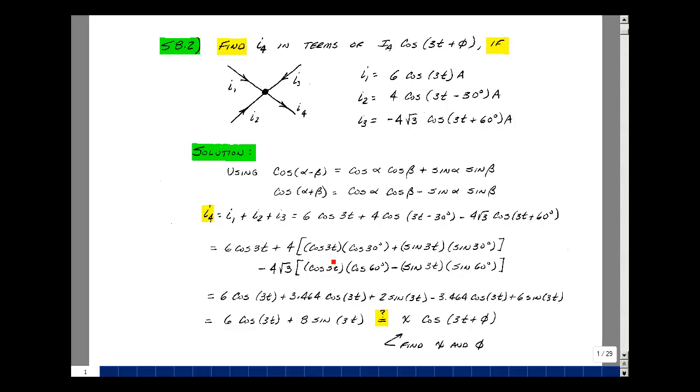Let's evaluate this. The cosine of 30 is square root of 3 over 2. Multiply by 4, you get 3.464 times cosine of 3t. The sine of 30 is a half, so times 4 is 2. Then minus 4 square root of 3, and cosine of 60 is 1 half, so that's minus 3.464. The sine of 60 is square root of 3 over 2, times sine of 3t, this gives me square root of 3 squared, so I get 3, dividing by 2 cancels with the 4, giving me 2 times 3 or 6.